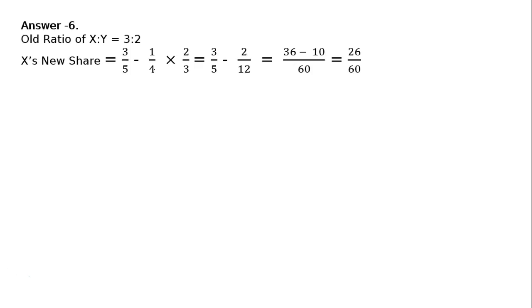X's new share. Original share or old share was 3 upon 5, minus - Z is taking one-fourth share in the ratio of 2 to 1 from X and Y.